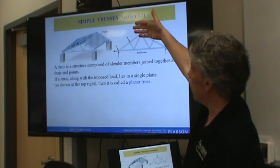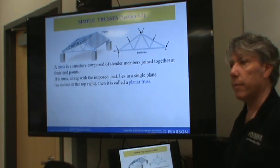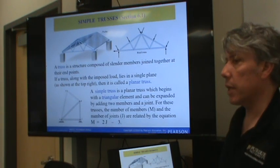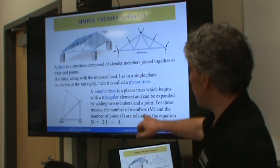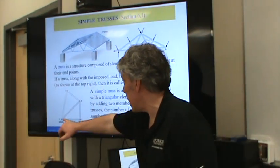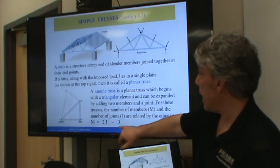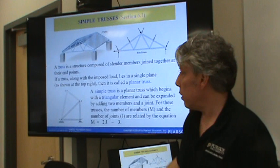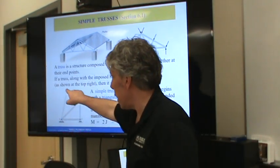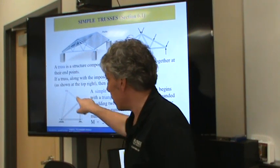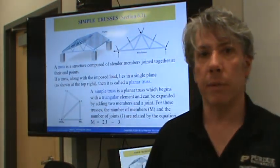All right. If the truss with the imposed loads are all in a plane, then it's called a planar truss. And those are the most common kind, at least for buildings. But there can be three-dimensional trusses as well. A simple truss is a planar truss with a triangular element, what begins with that. It can be expanded by adding two members and a joint. You notice how each of the members, anytime you have them, they're in groups of three. They're in triangles.